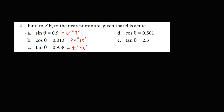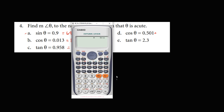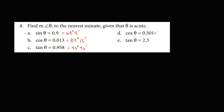For cosine theta equals 0.501, we use shift cosine of 0.501, which gives 59 degrees and 56 minutes. So the answer is 59 degrees and 56 minutes.